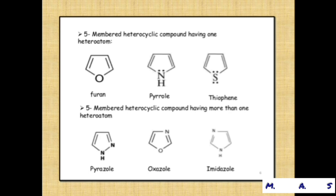Furan — starting from oxygen, you can number clockwise or anti-clockwise, giving a five-membered ring. Next, pyrrole contains NH; starting from nitrogen, you can number clockwise or anti-clockwise. Next, thiophene — thiophene means sulfur is present. You can number clockwise or anti-clockwise.